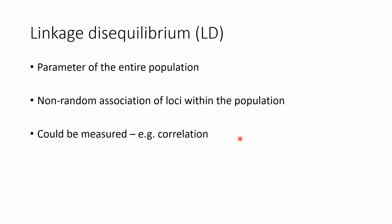I want to underline that LD is in fact a parameter of the population, so you need more individuals — and in the best case a large number of individuals — to determine the LD between two loci in a population.